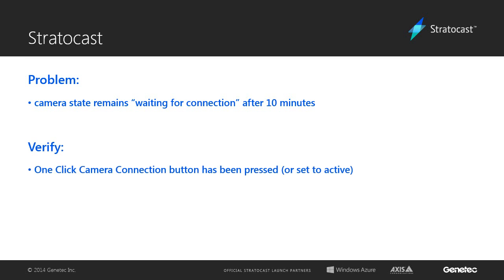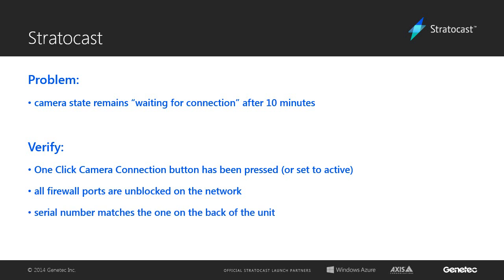The first thing to check is that the one-click camera connection button has been pressed or has been set to active. See the section on adding video units for more information on setting that up. You will also need to verify that all the firewall ports are unblocked and the video unit can access the network. Double-check the serial number next and make sure it matches with the sticker on the back of the video unit.